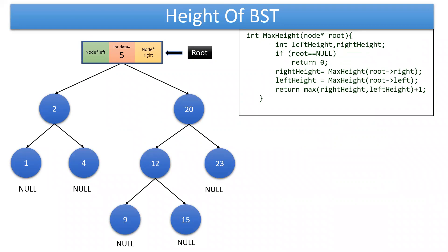First we will see what is meant by the height of a binary search tree, or how to calculate it. Height is nothing but the maximum level in the tree. We assume the root is present at level 0, child nodes of the root are at level 1, grandchildren are at level 2, and so on. In this example, the root node 5 is at level 0, its children at level 1, grandchildren at level 2, and great-grandchildren at level 3. So the maximum level is 3, meaning the height of this tree is 3.